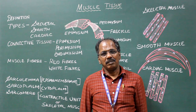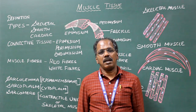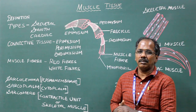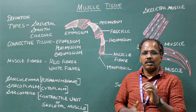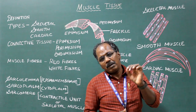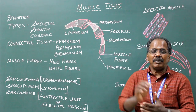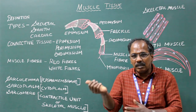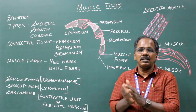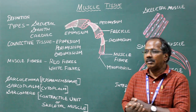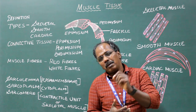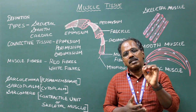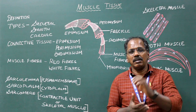Good morning. Today we are going to see the muscular tissue. Muscle definition: the muscle fiber or myocyte are elongated fibers which have a specialized function of contraction. It is derived from embryonic mesenchyme. It has rich blood supply and nerve supply.